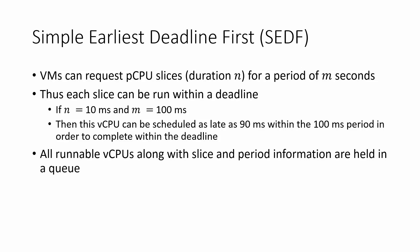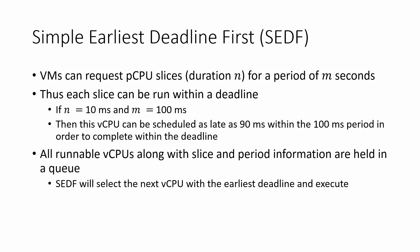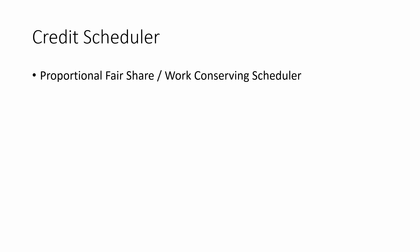All runnable vCPUs along with their slice and period information are held in a queue, and the scheduler simply selects the next vCPU with the earliest deadline and executes it. The credit scheduler is a little more complicated — it is a proportional fair share, or work-conserving, scheduler where each virtual CPU is provided with two variables: a weight and a cap.